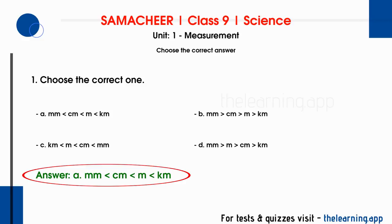For example, one centimeter is equal to 10 millimeters. One meter is equal to 100 centimeters. One kilometer is equal to 1,000 meters.